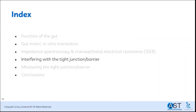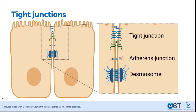This brings us to interfering with the tight junctions. When talking about tight junctions in the perspective of TEER, we mean all junctions that contribute to the barrier function: the tight junctions, which are composed of different proteins such as claudins and occludins, but also adherens junctions, which consist of E-cadherin and catenin, and more towards the basolateral side, desmosomes, which also contribute to barrier integrity.